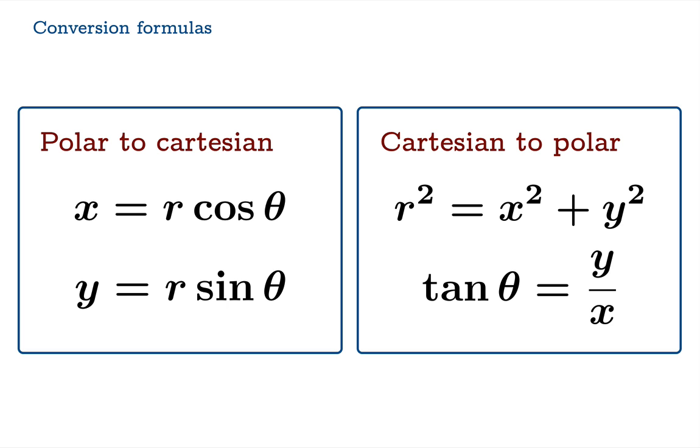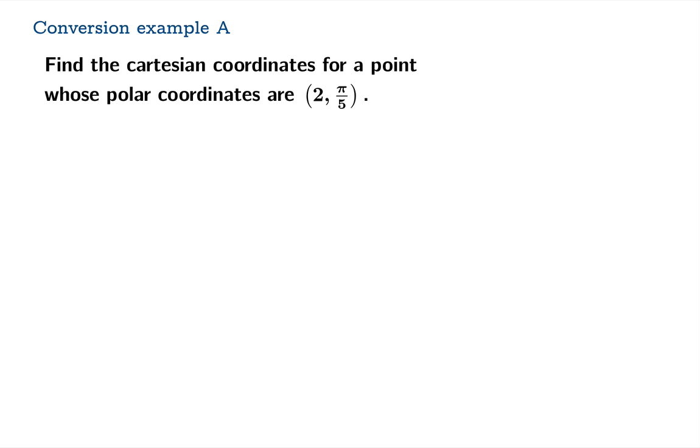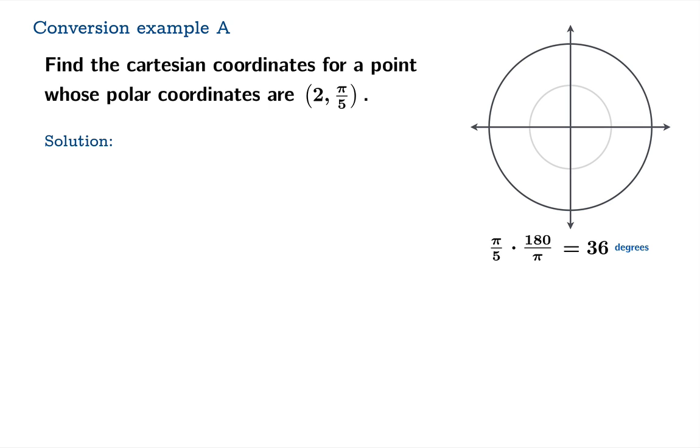Let's take a look at the conversion formulas in action. So let's find the Cartesian coordinates for a point whose polar coordinates are (2, π/5). Now we could draw a simple sketch. So we're 2 units away from the origin and we are π/5 units away from the x-axis. Let's convert to degrees just to get a sense of where we are. It's about 36 degrees. It's actually 36 degrees on the nose. And so this is the point we're looking for right here. We want the Cartesian coordinates.